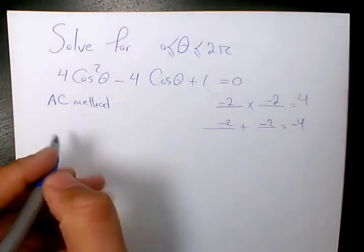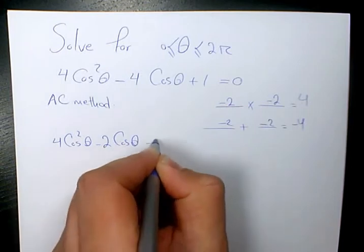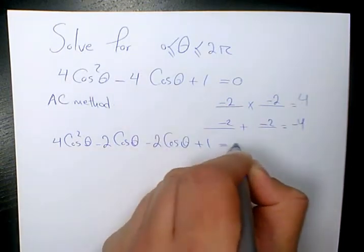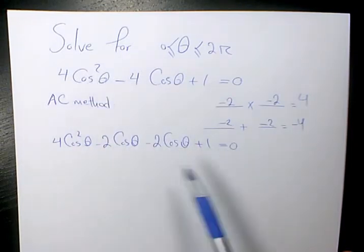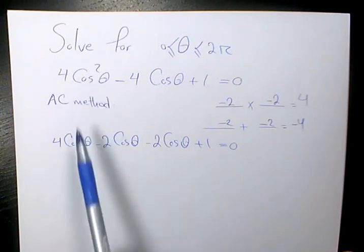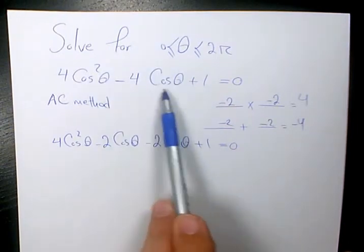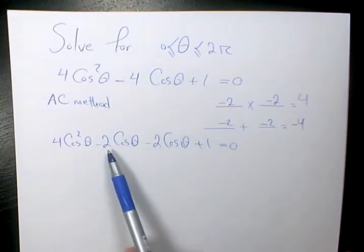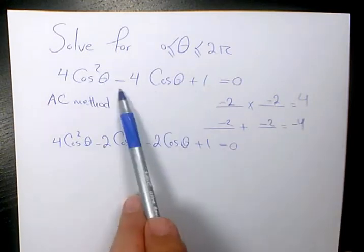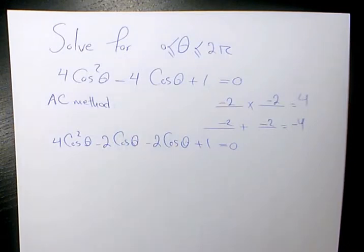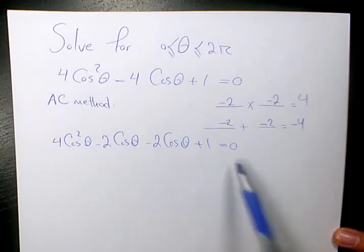So we have 4 cosine squared theta minus 2 cosine theta minus 2 cosine theta plus 1 equals to 0. So I change this trinomial to the same equation with four terms. The first term is going to be the same, the last term is going to be the same, but the middle term, instead of negative 4 cosine theta, I wrote it as negative 2 cosine and negative 2 cosine based on what we found here. So instead of one term, I split it into two different terms. Now I want to use group factoring, and I'm going to factor the first two terms and the last two terms.